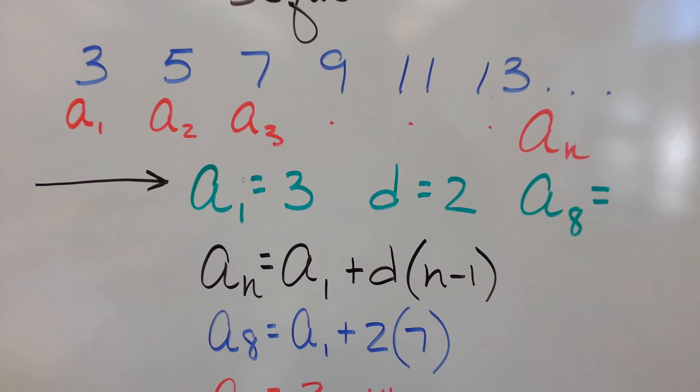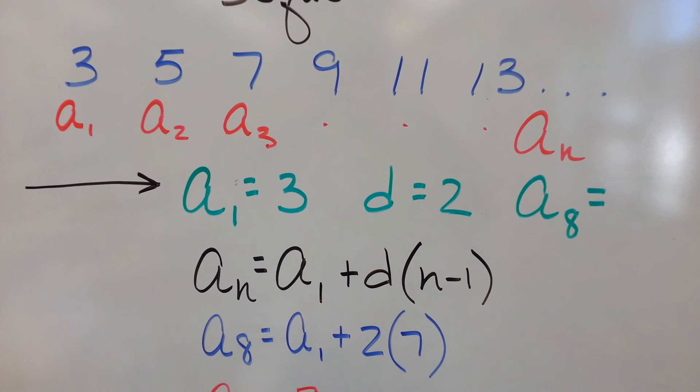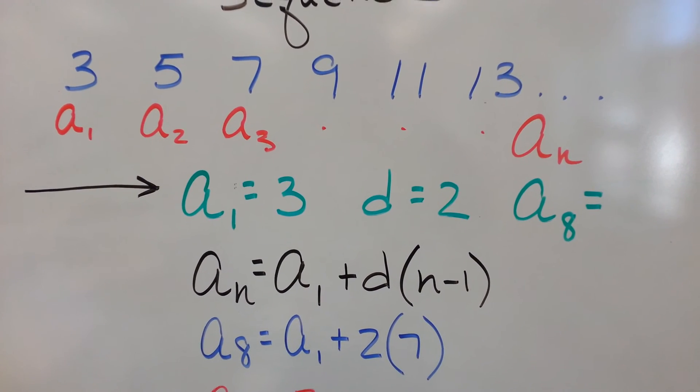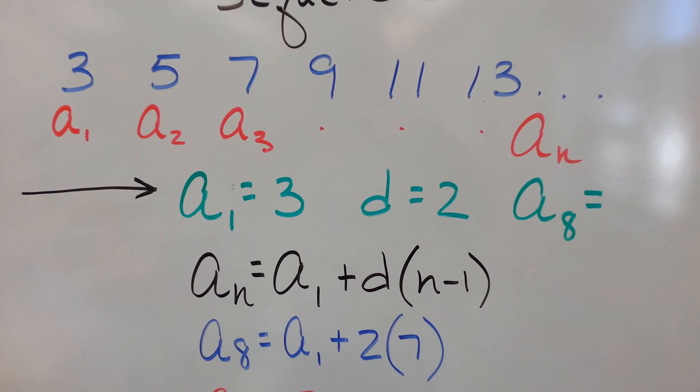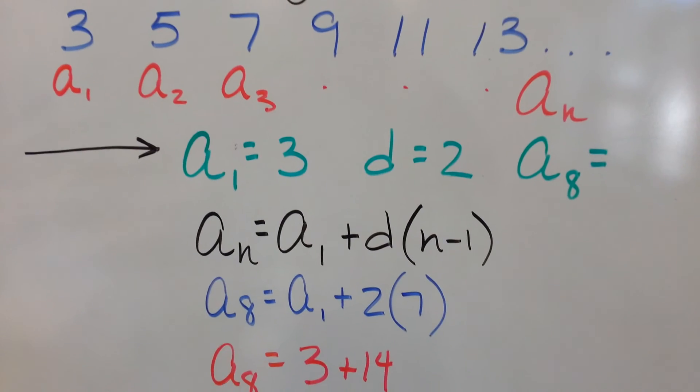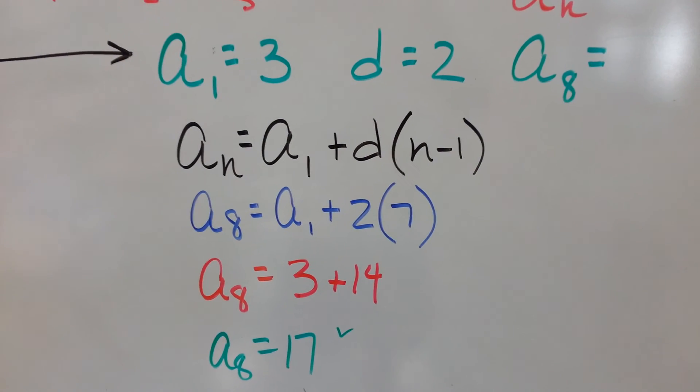Let's go up and check. 3, 5, 7, 9, 11, 13. That's the 6th term. The 7th term is going to be 15. And the next term, 8, must be 17. Hey, we did it right.